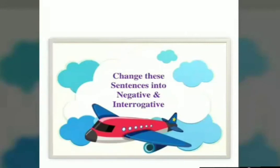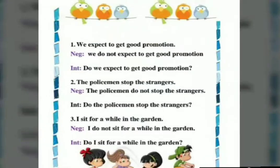Now we have another activity in which we have to change sentences into negative and interrogative using do not or does not. Sentence one: We expect to get good promotion. Negative: We do not expect to get good promotion. Interrogative: Do we expect to get good promotion? Sentence two: The policeman stopped the strangers. Policeman is plural, so we will use do not. Negative: The policeman did not stop the strangers. Interrogative: Do the policeman stopped the strangers. Sentence three: I sit for a while in the garden. With I, we will use do not. Negative: I do not sit for a while in the garden. Interrogative: Do I sit for a while in the garden.